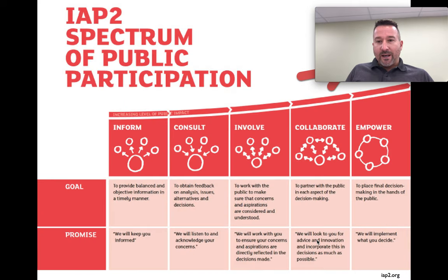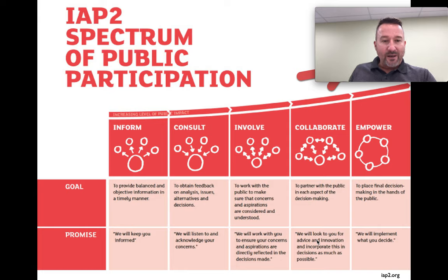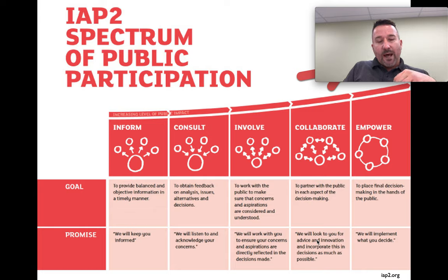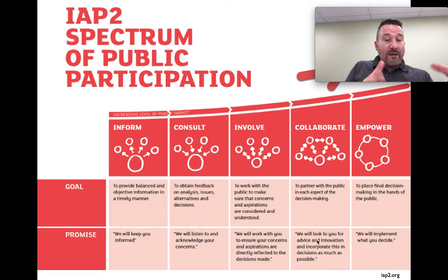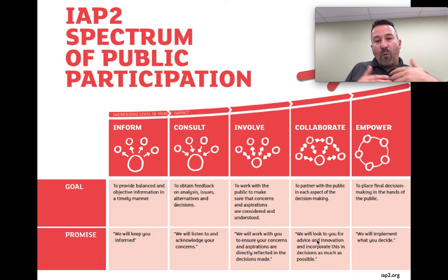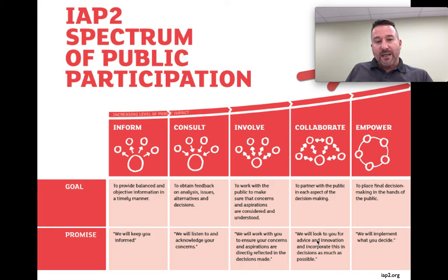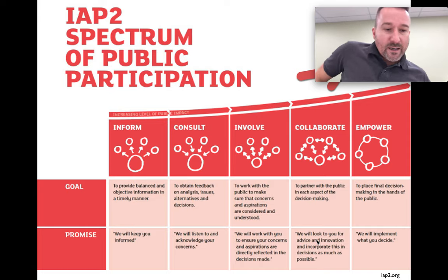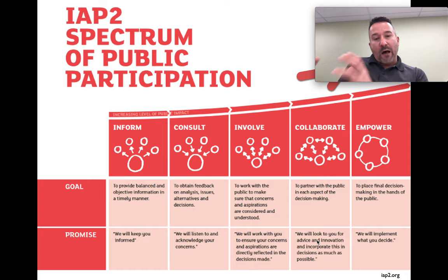This dovetails nicely with the notion of the IAP2 spectrum of public participation. IAP2 stands for the International Association for Public Participation and they distinguish between different levels or qualities of engagement — from a basic informing and consulting phase, to involving people and enabling collaboration, and eventually reaching a level of empowerment. Our research question is: how do we reach empowerment status when it comes to smart cities and city analytics?